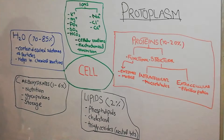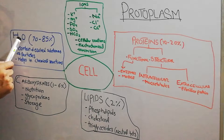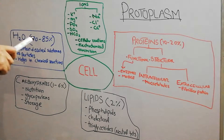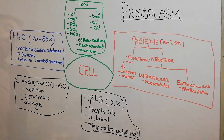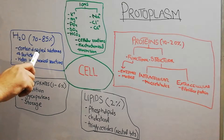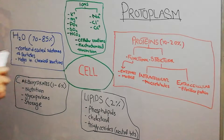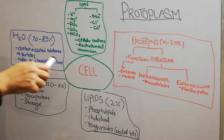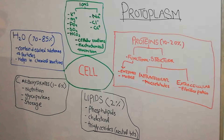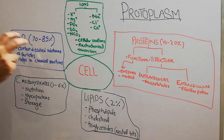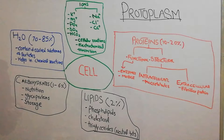The first and very important component of protoplasm is water. It makes up 70 to 85 percent of the cell. It basically contains some dissolved substances, and there are some floating particles on the surface of water present in the cell.